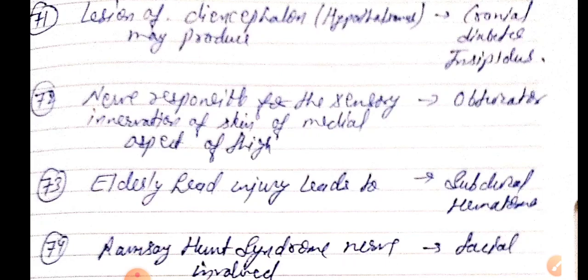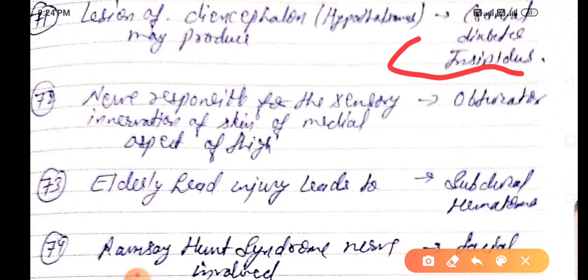Lesion of diencephalon hypothalamus may produce central diabetes insipidus or cranial diabetes insipidus. Nerve responsible for sensory innervation of the skin of the medial aspect of the thigh is obturator.